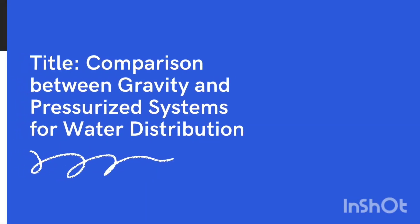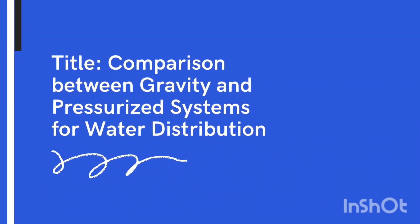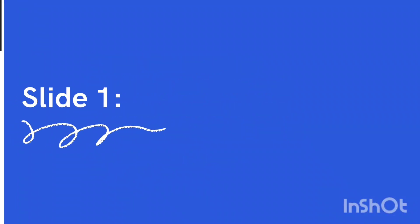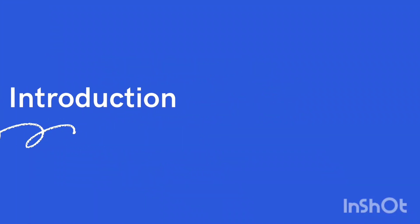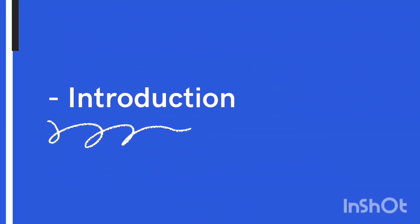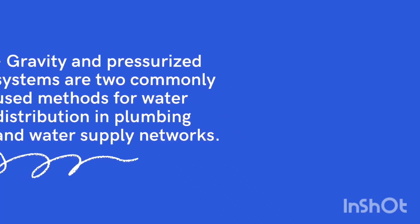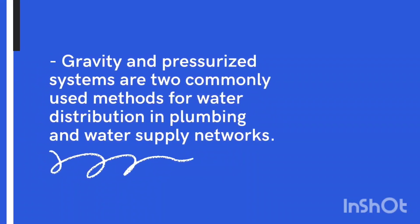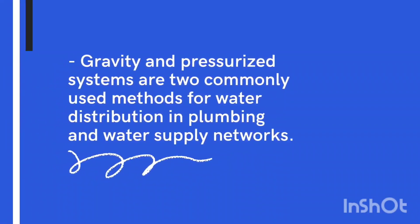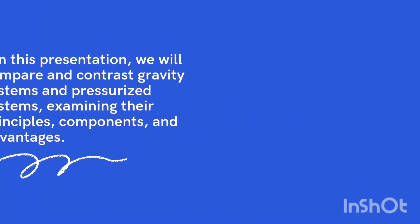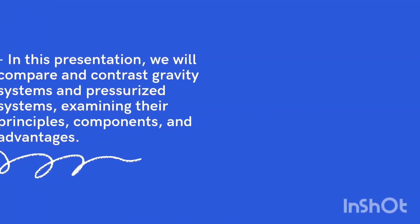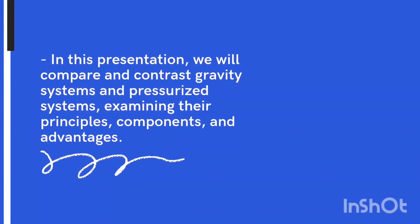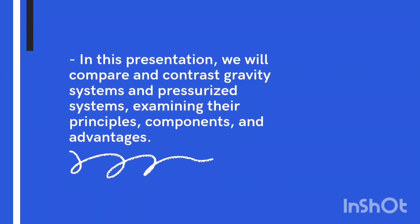Comparison Between Gravity and Pressurized Systems for Water Distribution. Gravity and pressurized systems are two commonly used methods for water distribution in plumbing and water supply networks. In this presentation, we will compare and contrast gravity systems and pressurized systems, examining their principles, components, and advantages.